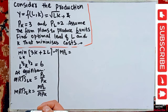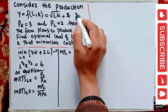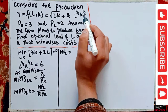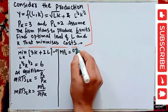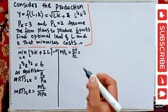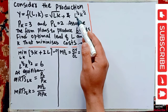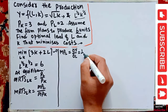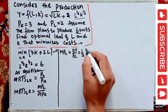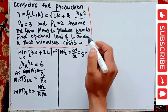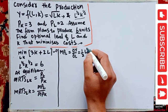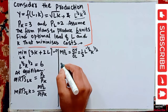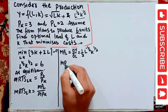The marginal productivity of labor means we differentiate the production function — L^(1/2) · K^(1/2) — partially with respect to L. So dy/dL = (1/2) · L^(-1/2) · K^(1/2). Similarly, the marginal productivity of capital means partially differentiating with respect to capital, giving (1/2) · L^(1/2) · K^(-1/2).